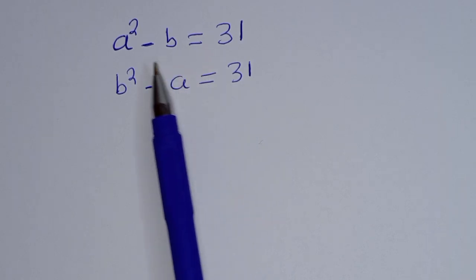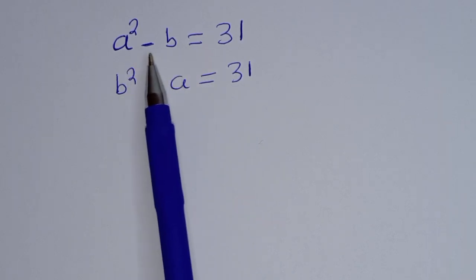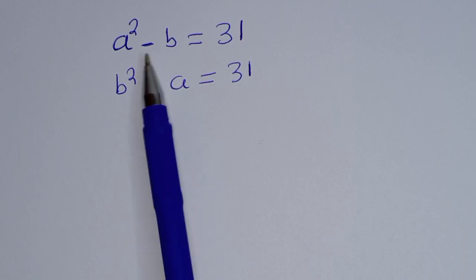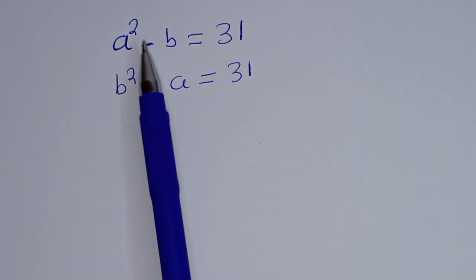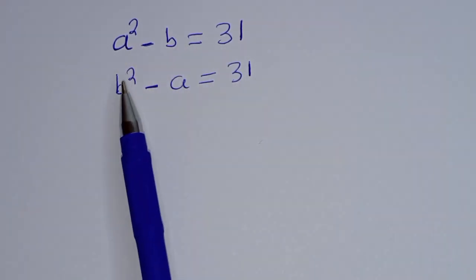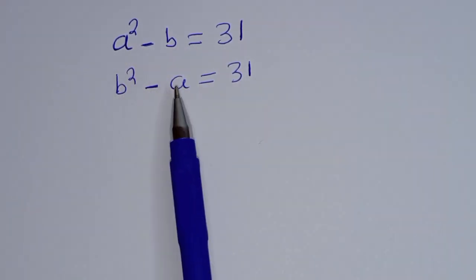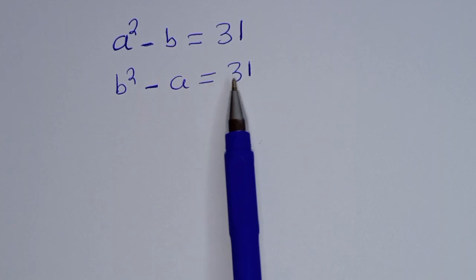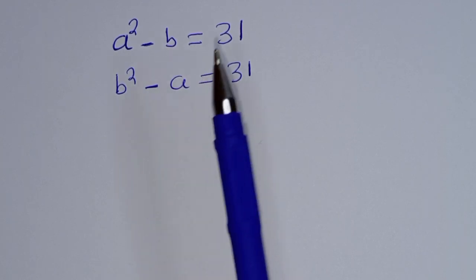Hello. How to solve for A and B from this given equation. A squared minus B is equal to 31. B squared minus A is equal to 31.